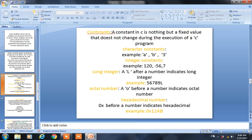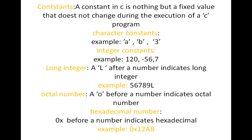Hi, this is Srinivas. Today I am going to explain the second class about C language. Today I will explain about constants. A constant in C is nothing but a fixed value that does not change during the execution of a C program.